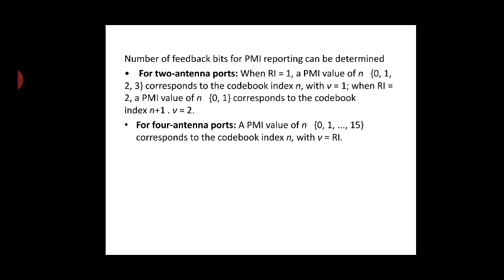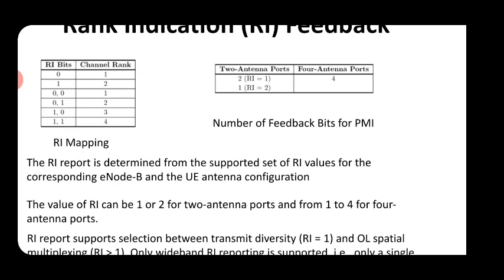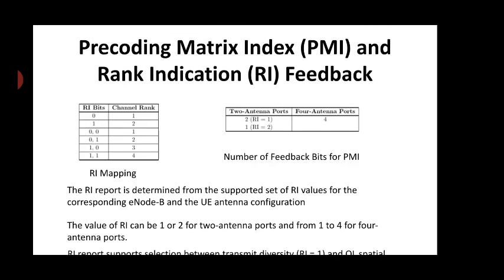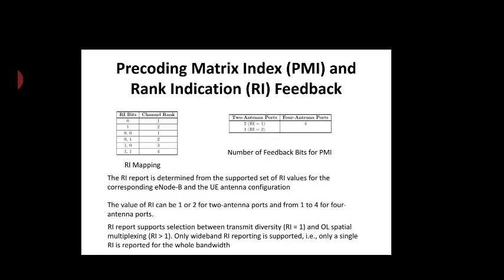Similarly for the 4-port antenna PMI, if N belongs to 0 to 15 (that is 0 to 16 subframes), it corresponds to codebook index N with V equal to RI. The number of feedback bits for PMI reporting can be determined from the table provided.